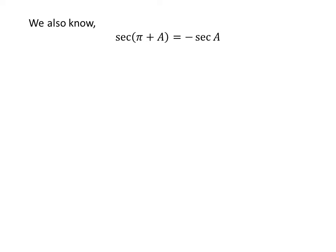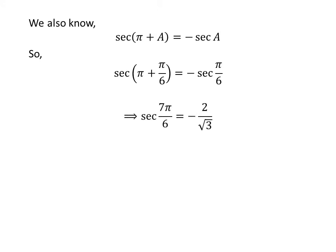We also apply the identity secant of 2 pi minus a is equal to minus secant of a. Using this identity as before, we get secant of 7 times pi upon 6 is equal to minus 2 upon square root of 3.